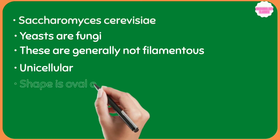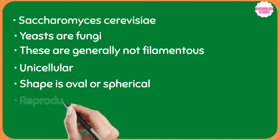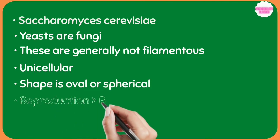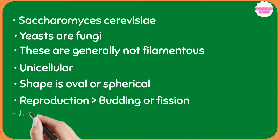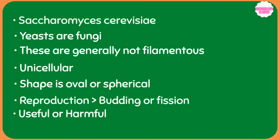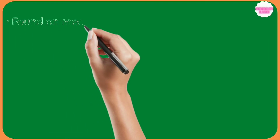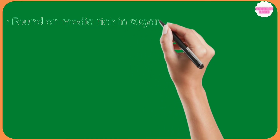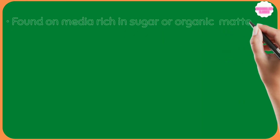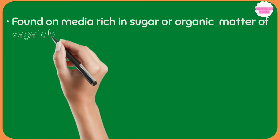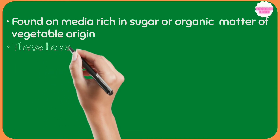The shape of yeast is oval or spherical. Reproduction in yeast is by budding or fission. These may be useful or harmful. They are found on media rich in sugar or any organic matter of vegetable origin.